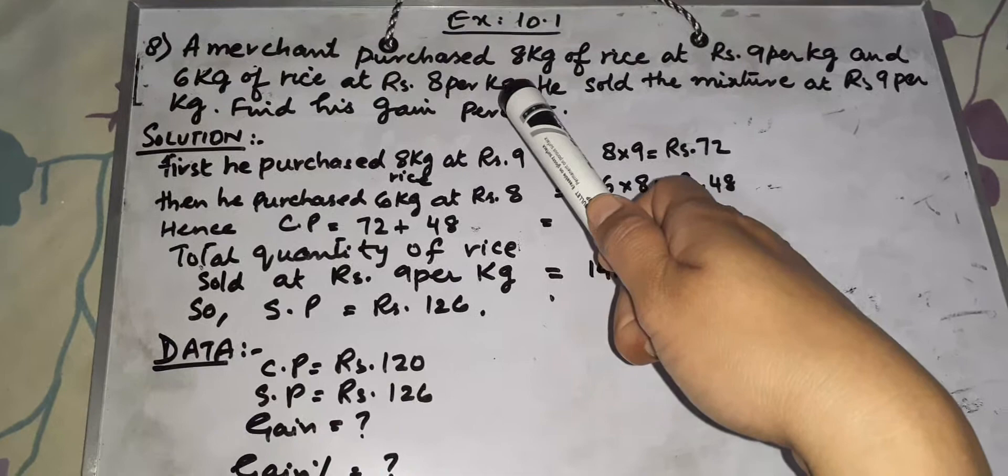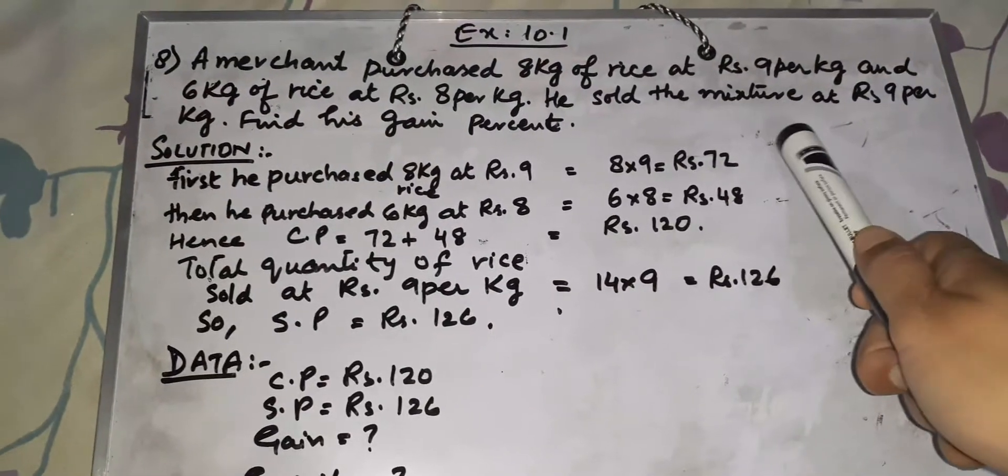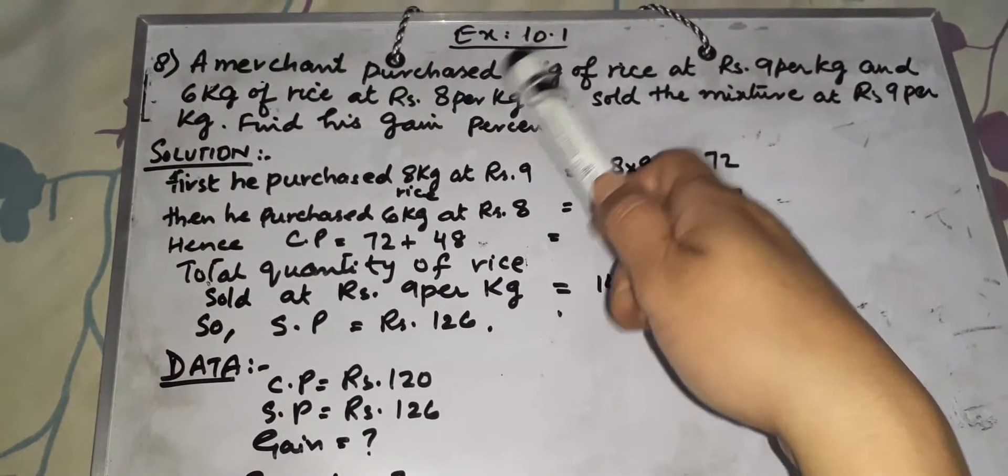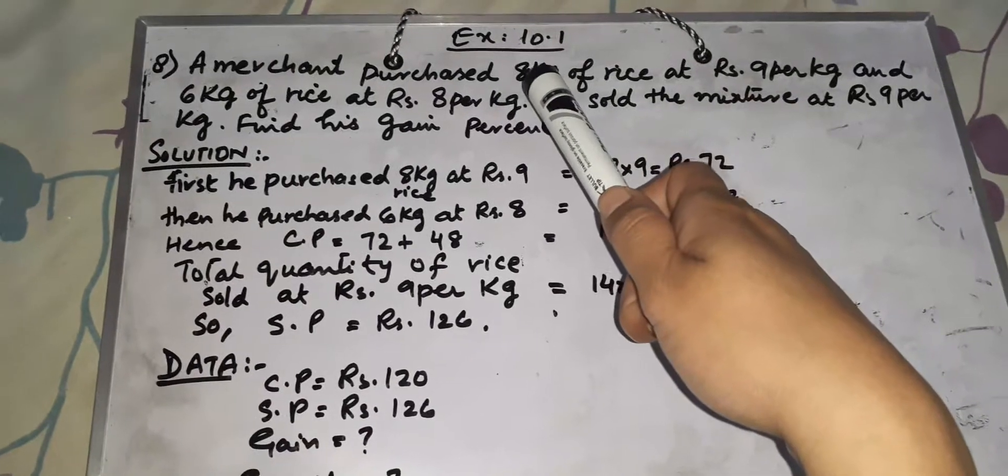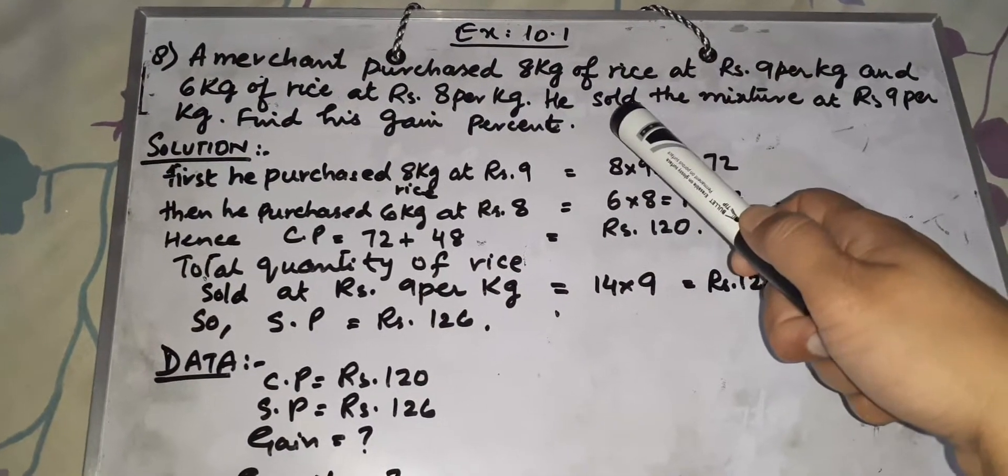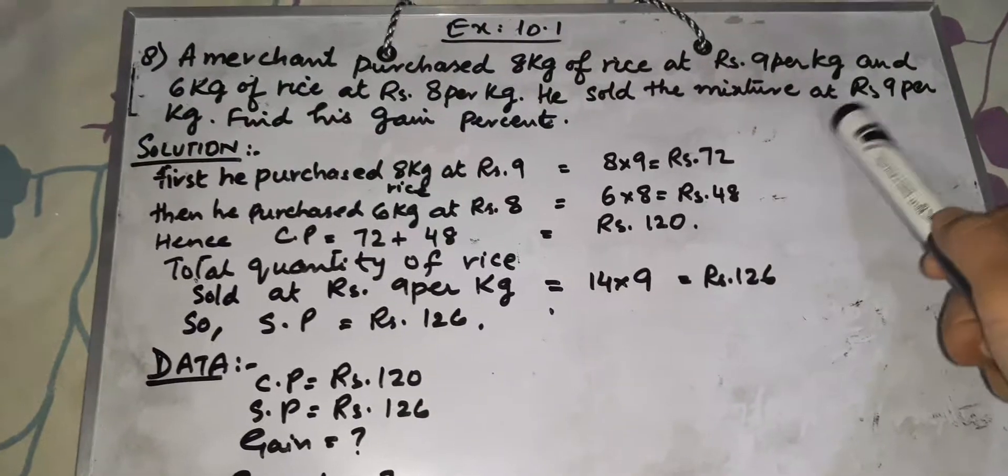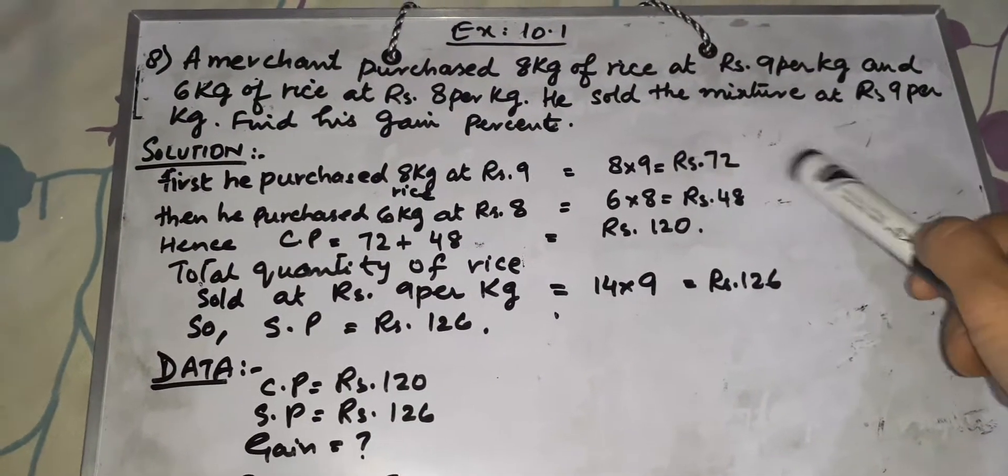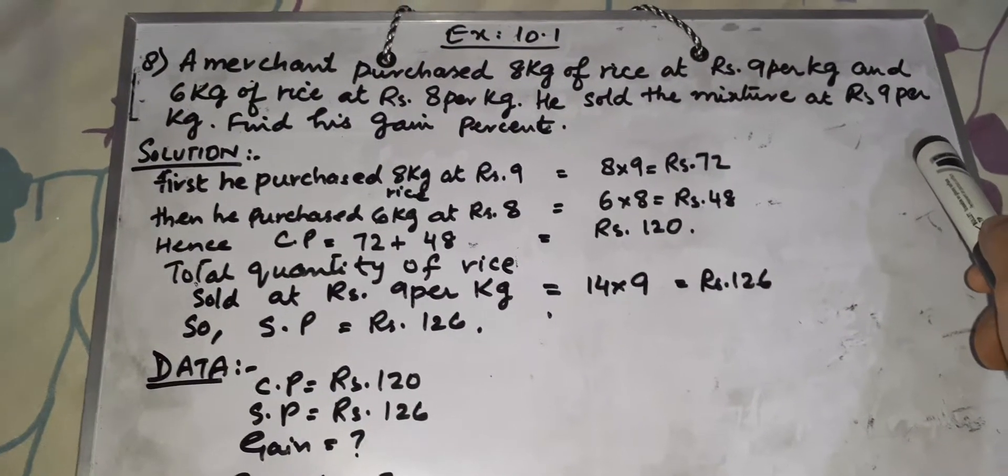Then he purchased 6 kg of rice at Rs. 8 per kg. He mixed these two quantities and sold the mixture at Rs. 9 per kg.